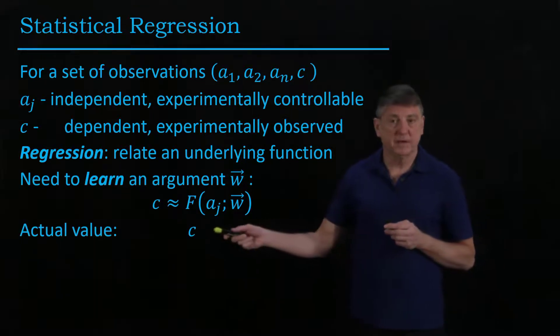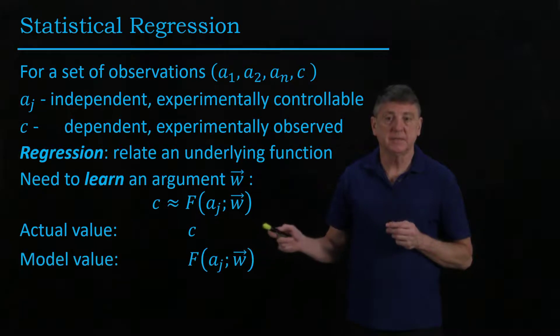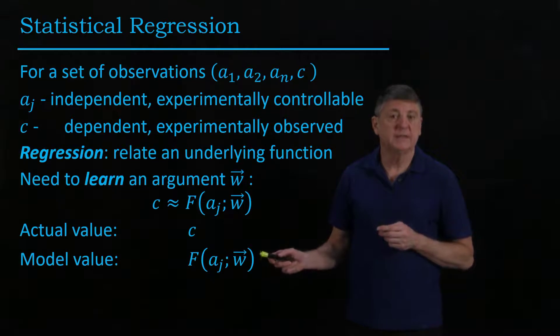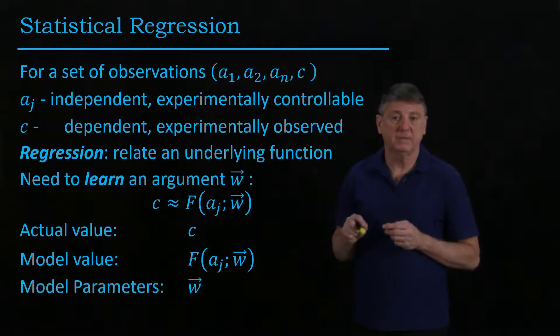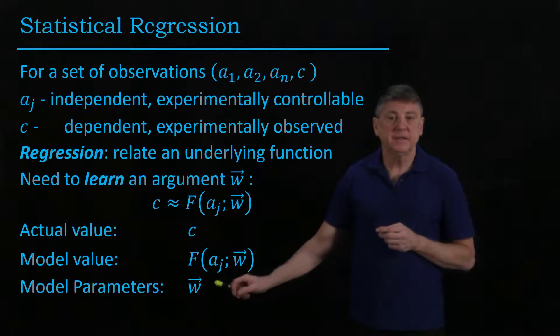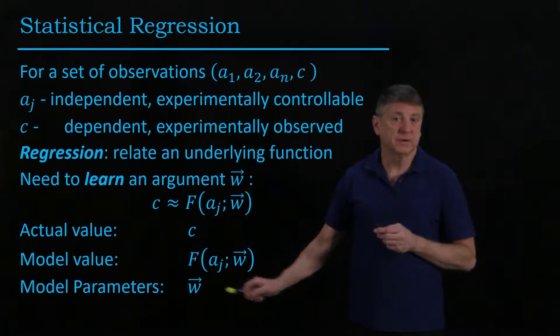So the actual variable is C and the model is F computed from the other independent observations and from our weight vector. And these parameters are what we're going to try to find.